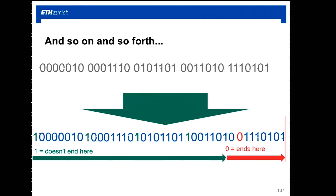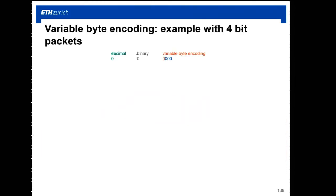Let's practice with 4-bit packets to train: for 0, it's just 0000. For values 1 through 7, we encode in 3 bits and append a 0 as the continuation bit. For 8 and above, which don't fit in 3 bits, we need two packets: the first packet encodes the high bits with a 1 continuation bit, and the second packet encodes the low bits with a 0 to signal it's the last packet.